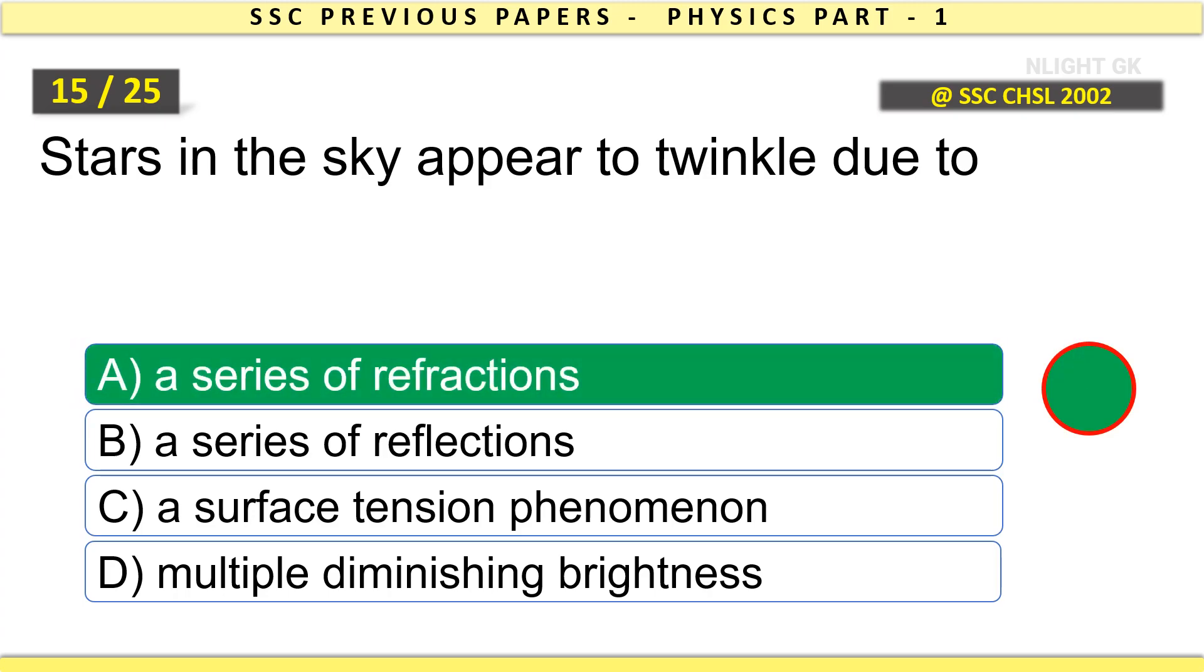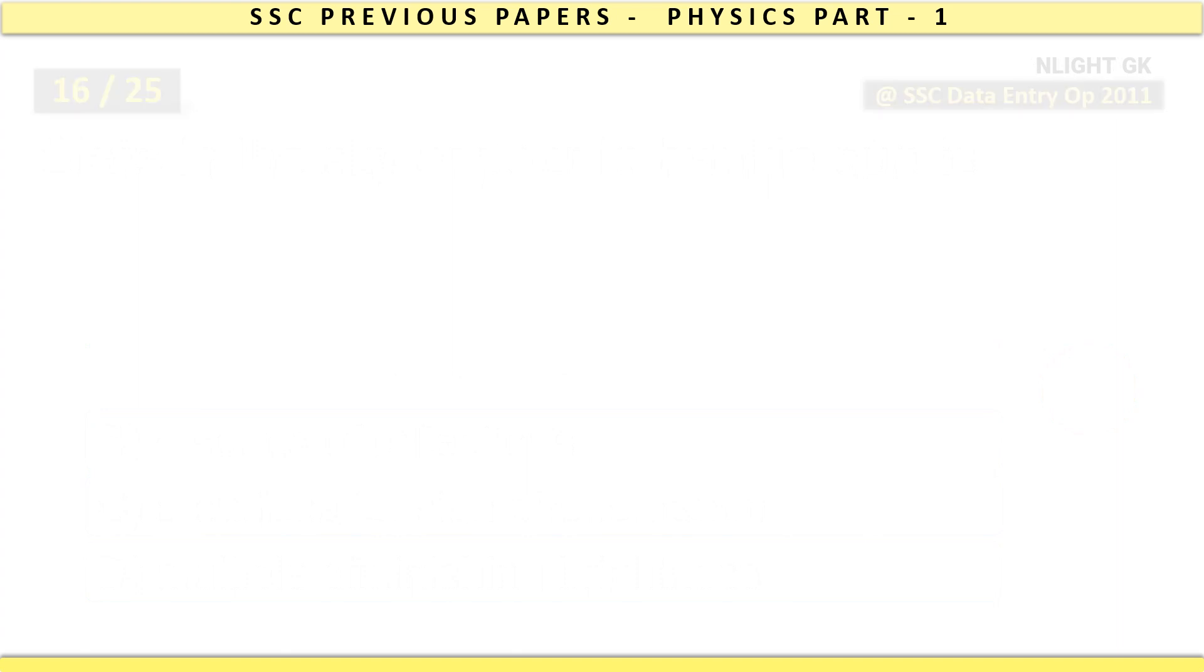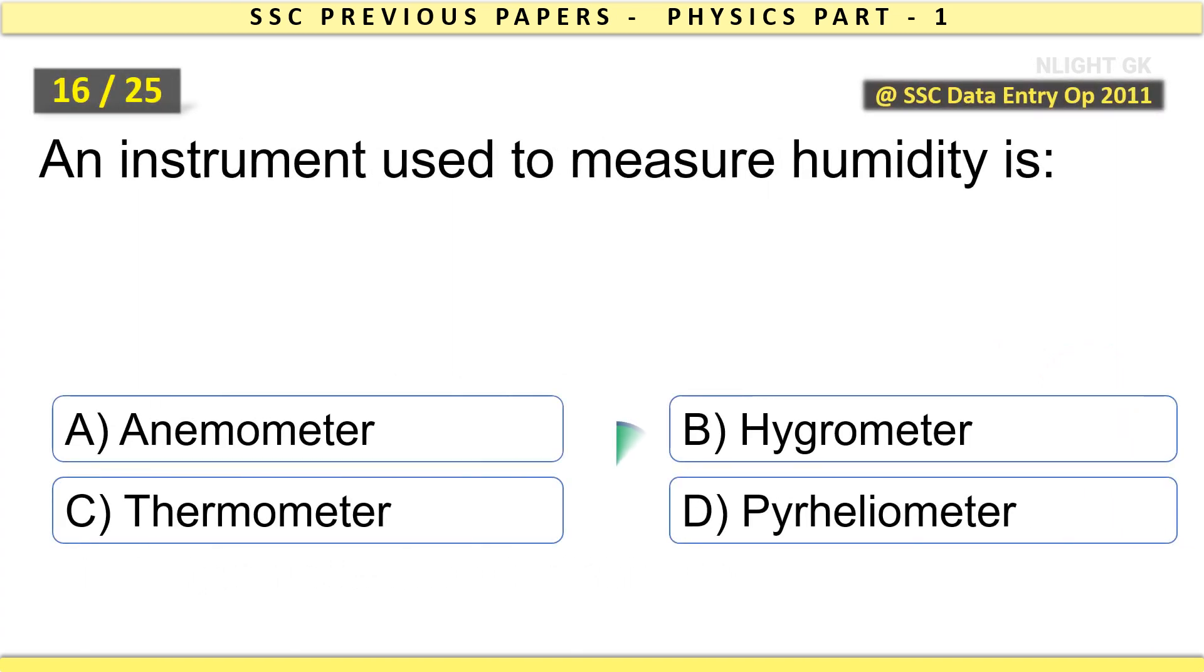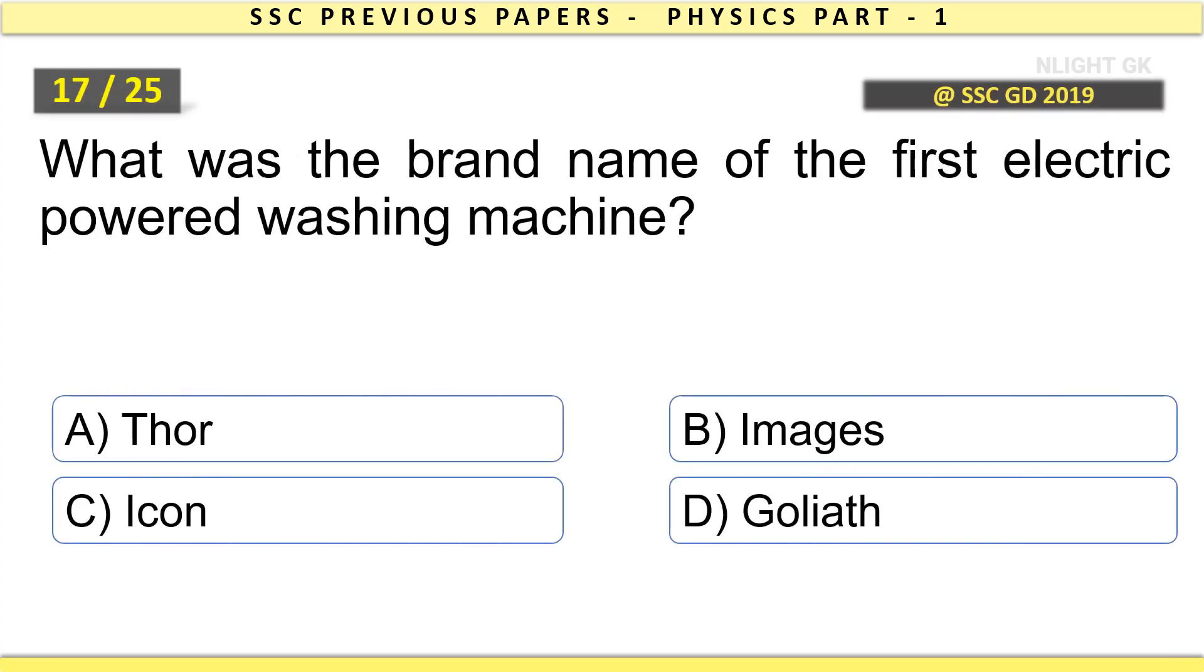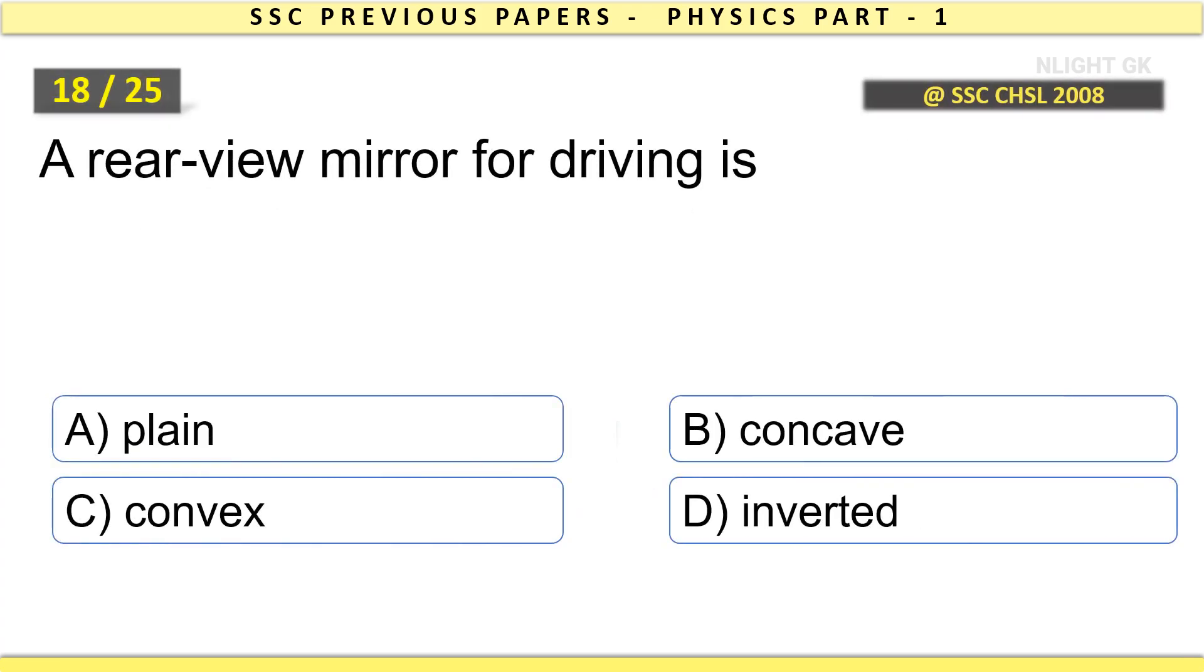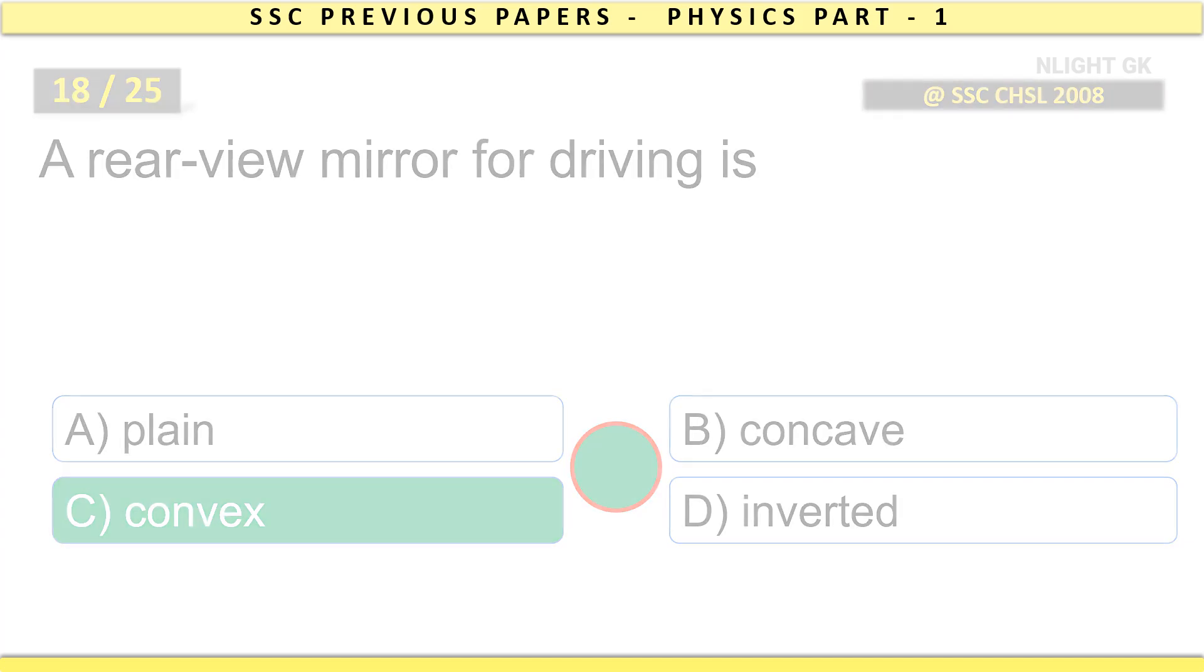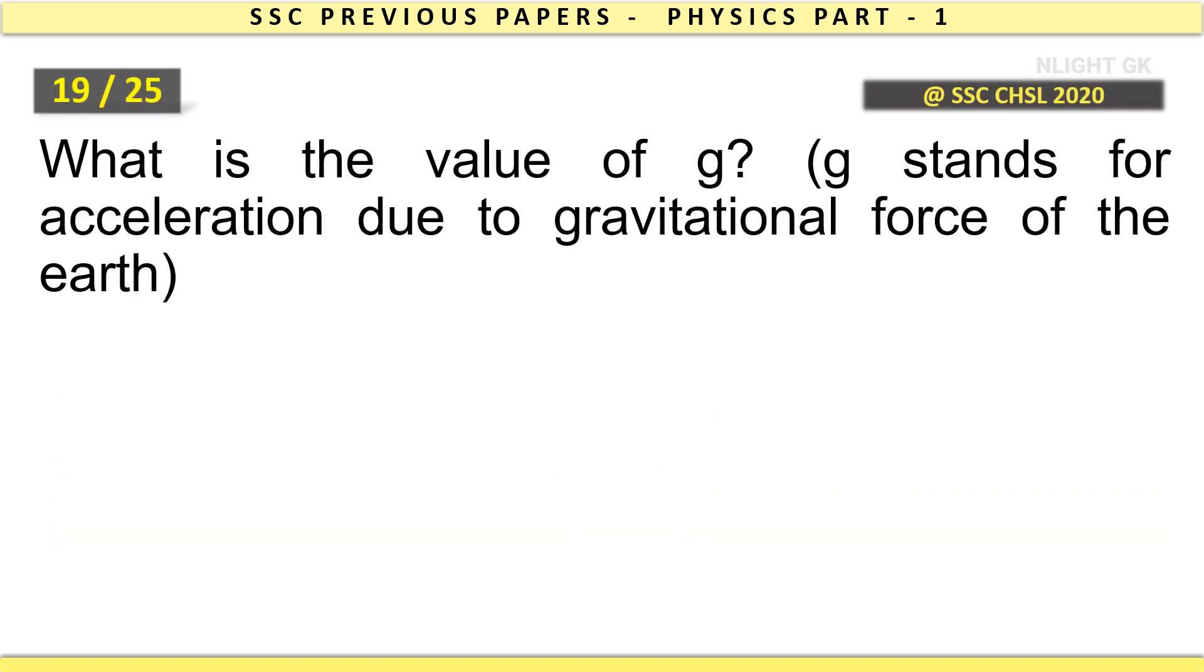An instrument used to measure humidity is hygrometer. What was the brand name of the first electric powered washing machine? A rearview mirror for driving is convex. What is the value of g? G stands for acceleration due to gravitational force of the earth.